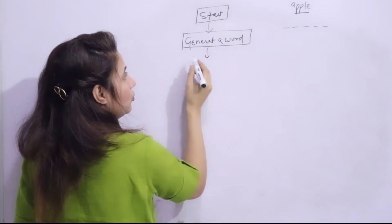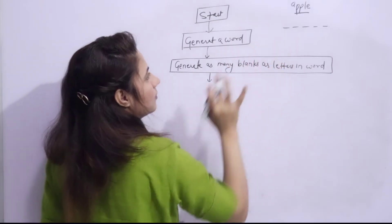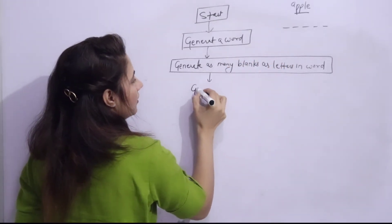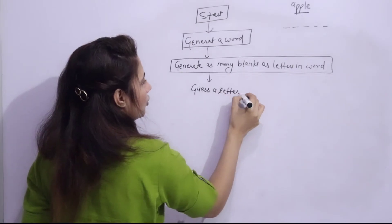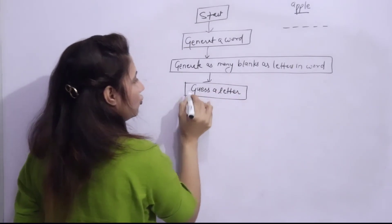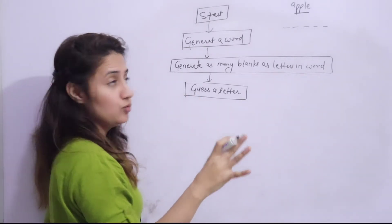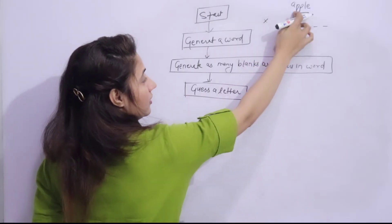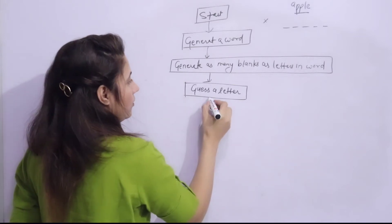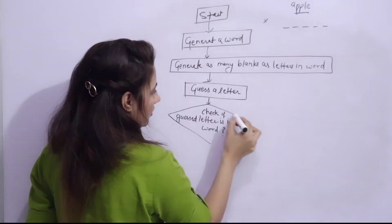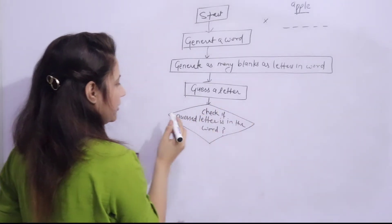So the third step is, after generating these blanks, now user will guess a letter. Or maybe you can say ask a user to guess a letter. Now we will check the guessed letter is correct or not. If user has guessed 'x', we'll check if 'x' is there or not for each position.